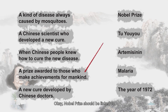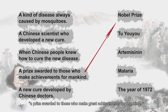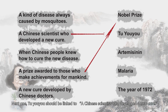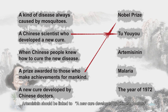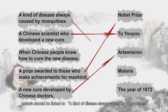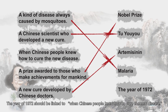Know about prize? Should be linked to: a prize awarded to those who make great achievements for mankind. Tu Yuyu should be linked to: a Chinese scientist who developed a new cure. Artemisinin should be linked to: a new cure developed by Chinese doctors. Malaria should be linked to: a kind of disease always caused by mosquitoes. The year of 1972 should be linked to: when Chinese people knew how to cure the new disease.